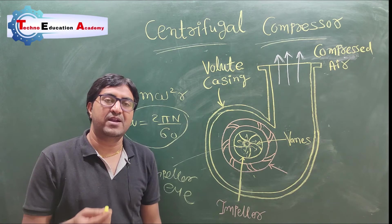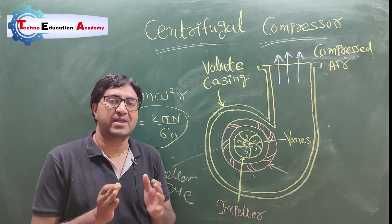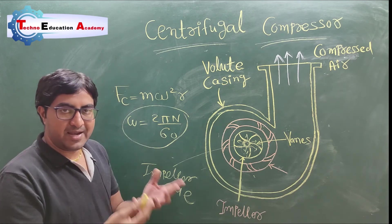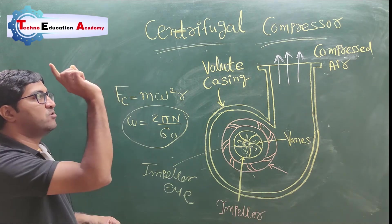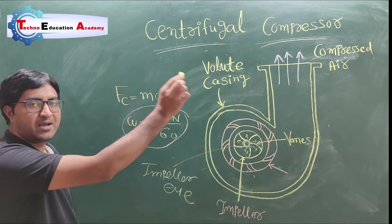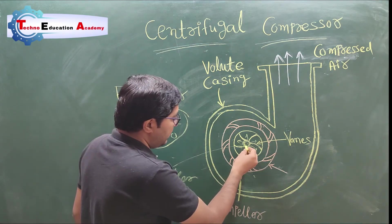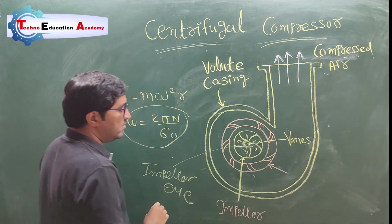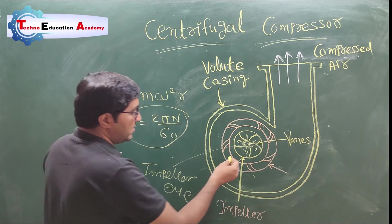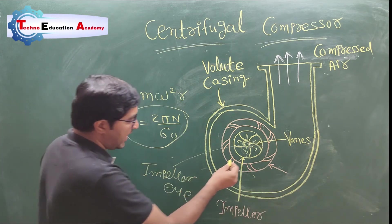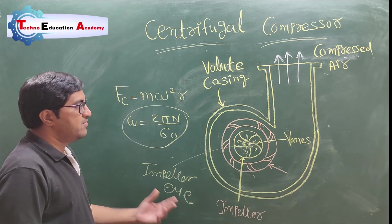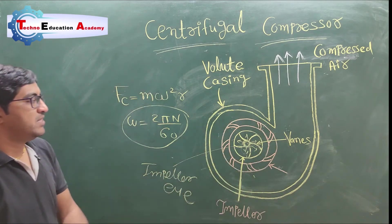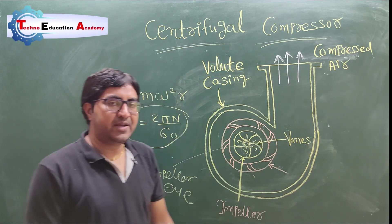According to the first law of thermodynamics, we cannot generate or destroy energy — whatever energy is available in nature is convertible. So when the air particles strike with the impeller blades, the acceleration of the air particles is reduced and the kinetic energy is converted into pressure energy. We require this pressure to compress the air. Then the air particles pass through the diffuser ring, where the pressure of the air is further increased, and it is delivered to the delivery tank.